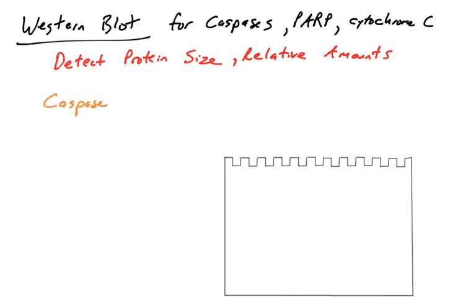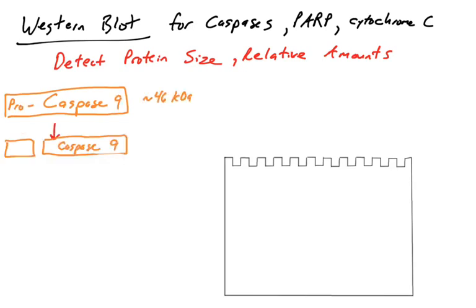Caspases become cleaved when apoptosis is occurring. Caspases are a family of proteins — they are proenzymes or zymogens. So when they are synthesized, they are made in a large inactive form. When caspases become activated, it's because they become cleaved by a protease.